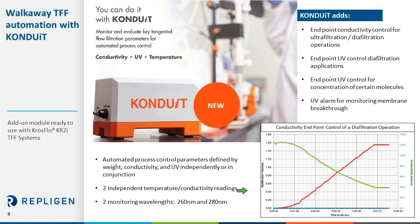We are now very excited to add the Conduit to our suite of system components. Conduit is an add-on module ready to use with new and previously installed KR2i systems. The Conduit supports real-time monitoring and endpoint control of solution conductivity, UV, and temperature for TFF operations. With the launch of Conduit, KFCOM is now capable of controlling your process via conductivity and UV, along with weight, either independently or in conjunction with one another. Conduit can support two independent temperature and conductivity readings, as well as two UV readings.